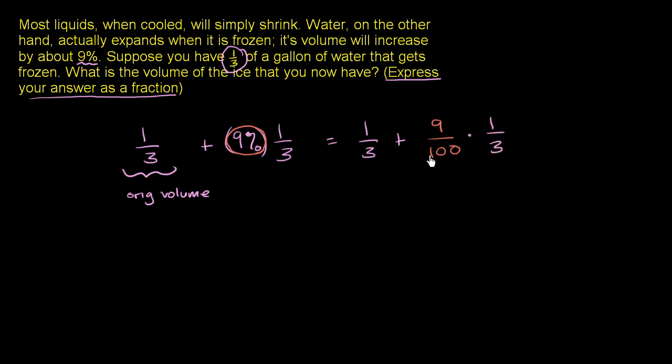And we can simplify this expression right over here. We have a 9 in the numerator, a 3 in the denominator. If we divide both of them by 3, we get a 3 and a 1. And so we're left with 1 third plus 3 hundredths times 1 over 1. Well, that's just going to be 3 hundredths. So this is just going to be equal to 1 over 3 plus 3 over 100.